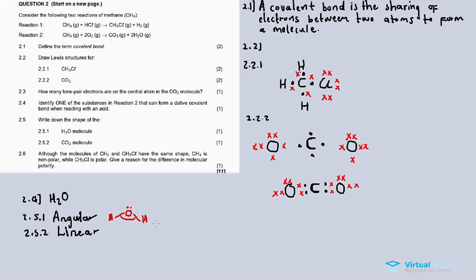2.6 asks although the molecules of methane and this molecule have the same shape. For 2.2.1, we have something like this. This line represents a covalent bond. Methane has one shape and this molecule has another shape. Actually, methane is CH4 and has the same shape as CH3Cl.